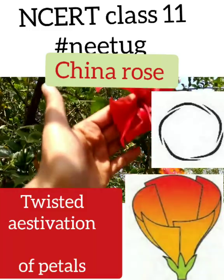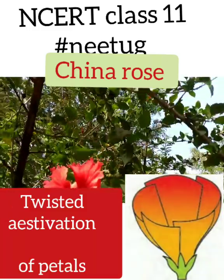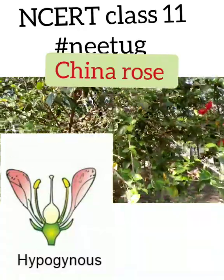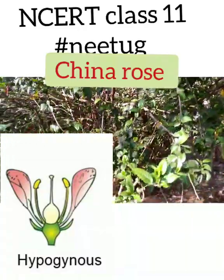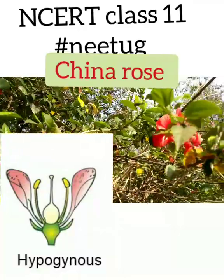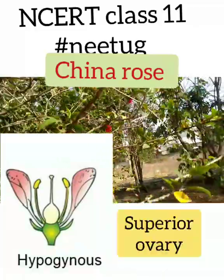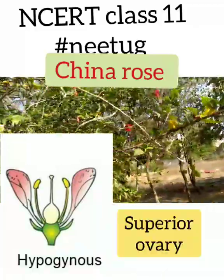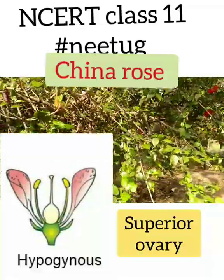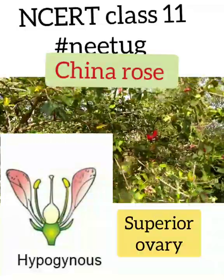The petals in the flower of China rose have twisted estivation. It is a hypogynous flower, which means the gynoecium occupies the highest position while other floral parts are situated below it. Thus, in a hypogynous flower, the ovary is superior.